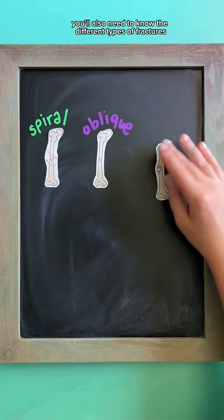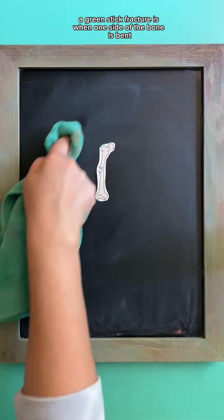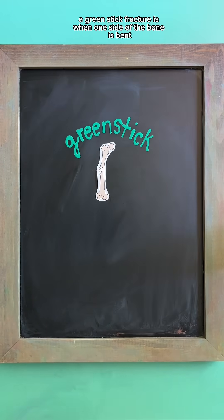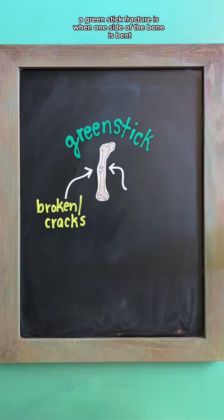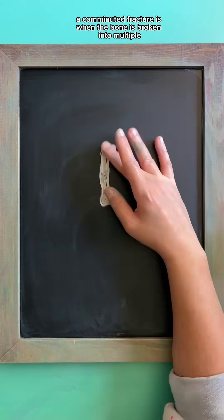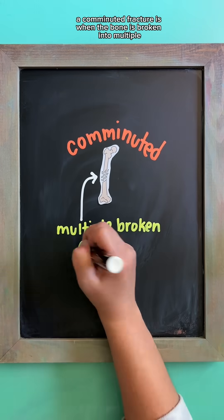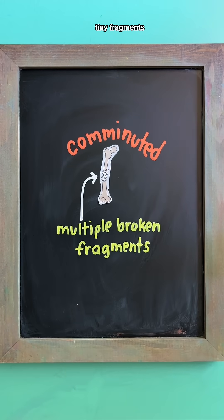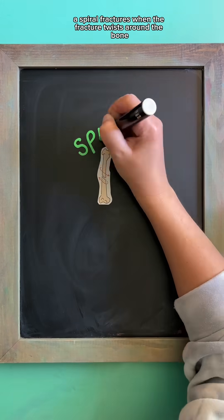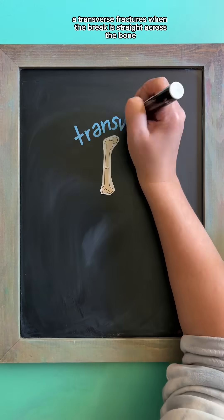You'll also need to know the different types of fractures. A greenstick fracture is when one side of the bone is bent and cracks on the other side. A comminuted fracture is when the bone is broken into multiple tiny fragments. A spiral fracture is when the fracture twists around the bone.